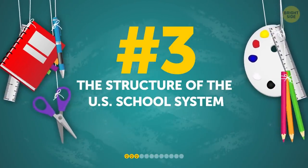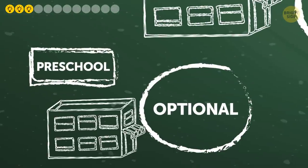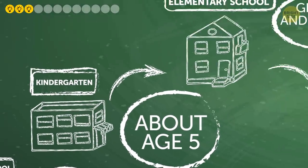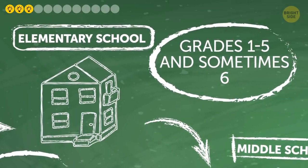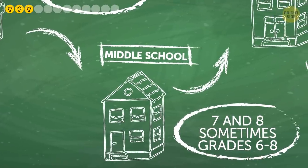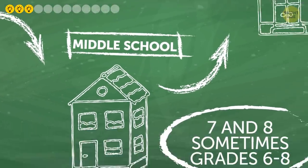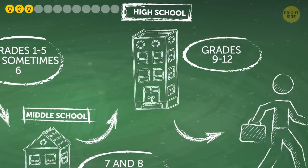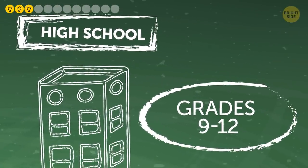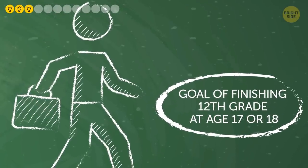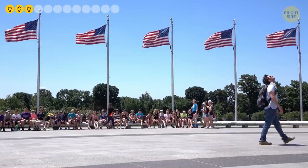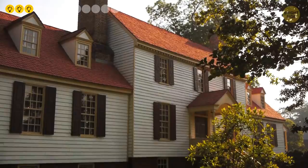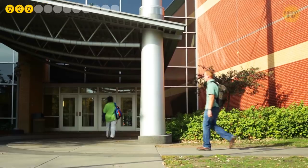Number three: the structure of the US school system. It starts with preschool, which is actually somewhat optional, then kindergarten, which a student would ideally start at about age 5. Then comes grades 1–5, and sometimes 6, also known as elementary school. Next comes junior high, also known as middle school, which is grades 7 and 8 — sometimes grades 6–8, depending on your school district. Then finally comes high school, which is generally grades 9–12, with the goal of finishing 12th grade at age 17 or 18. In the US, you can go to school online, attend public or private school, or even home school, but each of these grade levels must be completed before you can attend college.